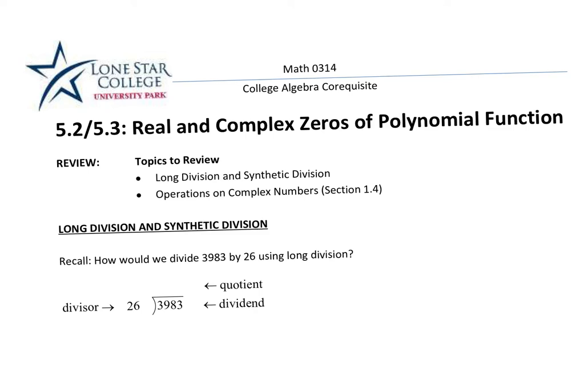In this section, we're going to talk about what we call the real and complex zeros of a polynomial function. In order to find those things, we're going to use the process of division — what we call polynomial division. There are two types of polynomial division we're going to deal with: long division and synthetic division.